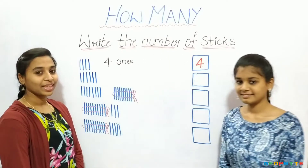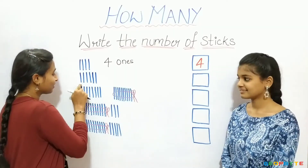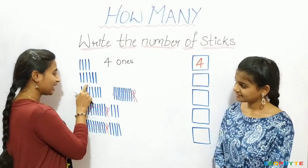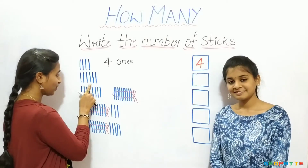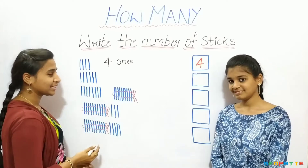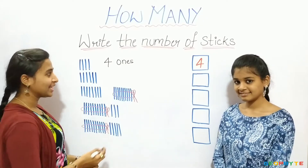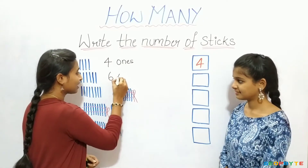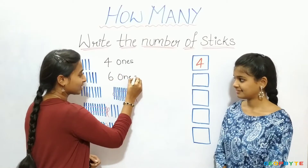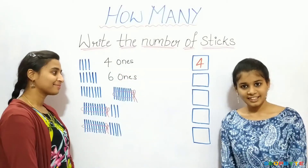Let us count these sticks. One, two, three, four, five, six. Six sticks. That is six ones. Let us write six.